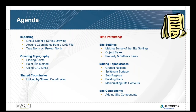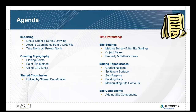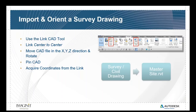We're going to start off with importing a CAD drawing. When it comes to importing, there are certain steps to bring in the 3D CAD file. We use the Insert tab and can either link or import a CAD file. We usually recommend linking because if that CAD file changes in the future, we can always relink it. Best practice is to use center to center, then move that CAD file in the X, Y, and Z direction, rotate it as needed, and once in the orientation we want, pin the CAD file so we don't accidentally move it.